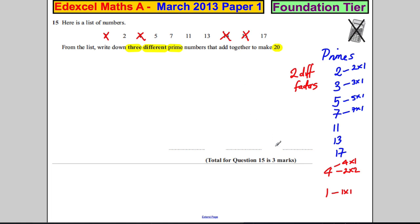Here are only primes left. Write down three different prime numbers that add together to make 20. So all we've got to do is make 20. 2 add 5 is 7, add 13 is 20. So 2, 5, and 13 worked out well for me. Are there any others? I don't think so, and we're done.